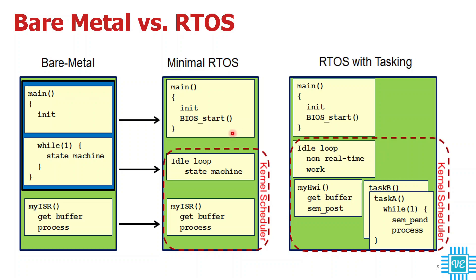When it comes to a minimal RTOS, the main function still has hardware initialization — that does not change. Then you have BIOS start, which is a function call or API to start the kernel in TI RTOS. Then you have one idle loop. You can use this idle loop with a minimal RTOS because the idle loop will only execute when there are no other tasks running in your application. You can develop this as a state machine, and it will process function calls one after the other — similar to bare metal. ISRs will be the same whether it is bare metal or a minimal RTOS.